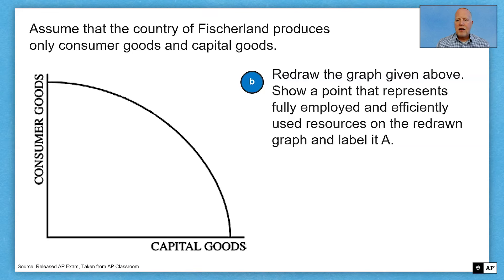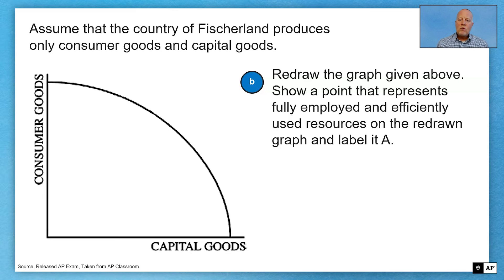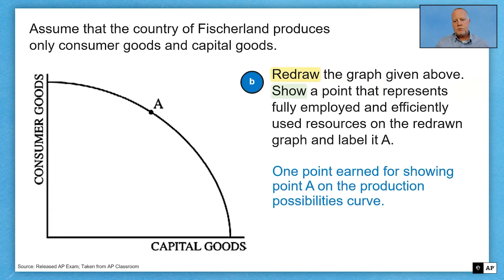The bowed outward shape of the PPC tells us we have increasing opportunity costs, and it's increasing opportunity costs for both — that's the only option possible. It's a multiple choice question; you've got to pick one of those four. Part B: redraw the graph given above. It is possible you would have to redraw the graph from the question. Show a point that represents fully employed and efficiently used resources on the redrawn graph and label it A. Remember to ace your graph. Point A should be on the curve — it could be anywhere on the curve. One point earned by placing point A on the curve.